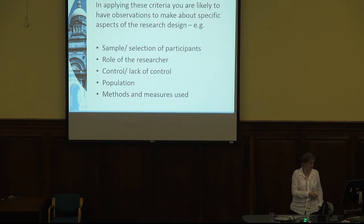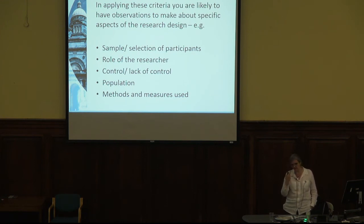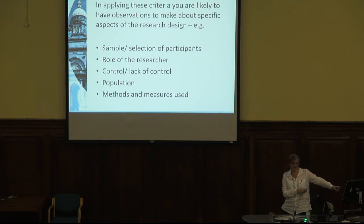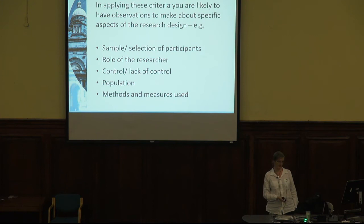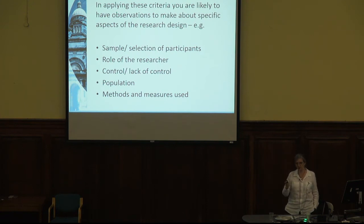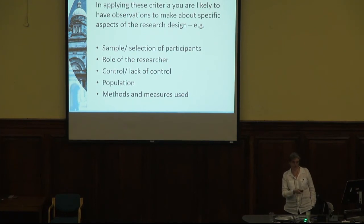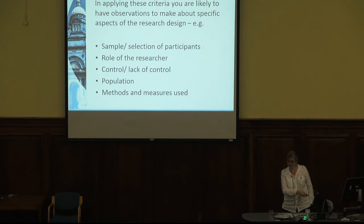We're not going to judge an ethnography by how good an experiment it is — it's like saying to an orange, 'you're not a very good apple.' So if you're evaluating something clearly interpretivist, not seeking generalizability or cause-and-effect, you're more likely looking at trustworthiness, authenticity, credibility, confirmability, and dependability. If you're evaluating an experimental design, then look at validity, reliability, and generalizability — those are the appropriate criteria. Decide the most appropriate criteria, say why they're appropriate, and link that back to your first section on paradigmatic assumptions.